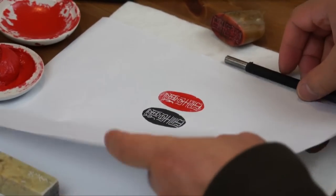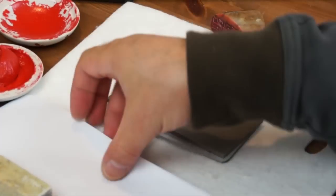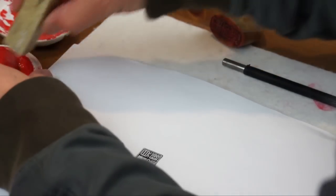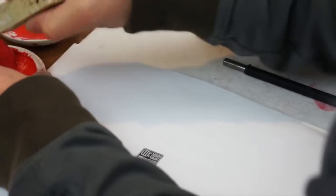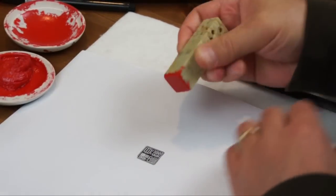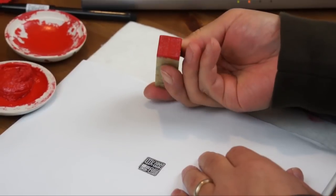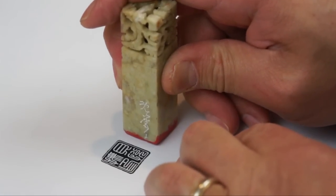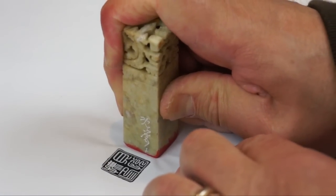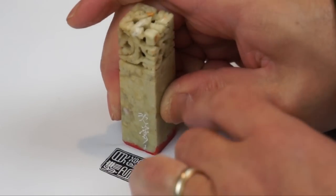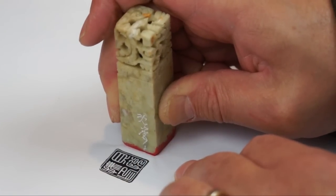So let me make another stamp for this name seal in a similar style, small seal script style. The signature facing the left. This is a nice stone with a dragon carving on top.